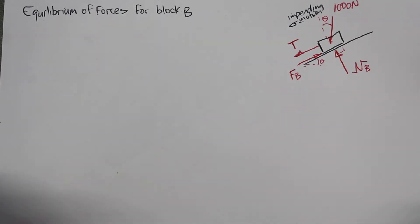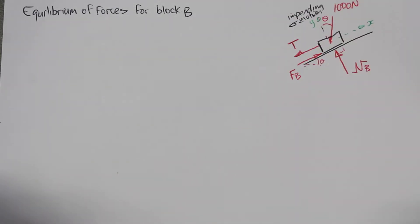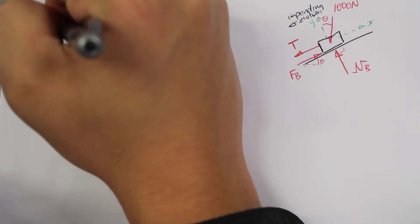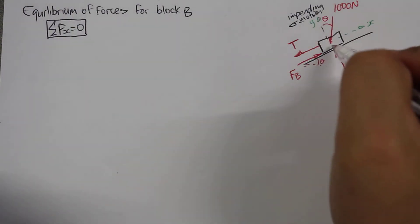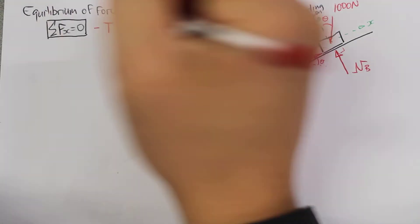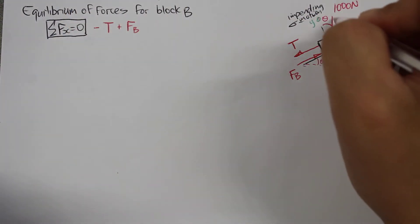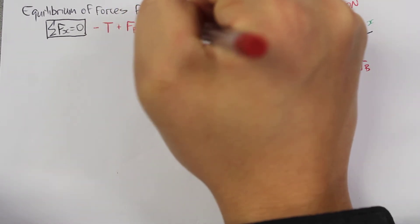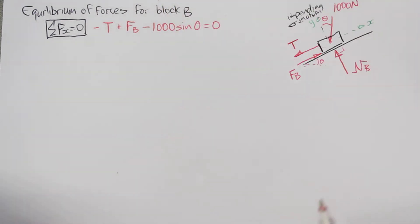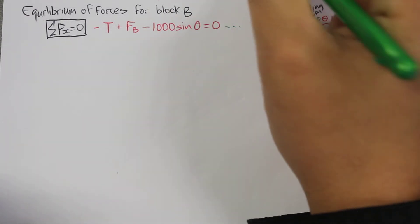From this free body diagram we'll look at the forces in the x-direction and the forces in the y-direction, and also the maximum friction force within that system. Summation of forces in the x-direction is equal to zero. In the x-direction we have the tension force going downhill, so minus T, plus the friction force going up the incline, minus the component of the 1000 Newton force going down the hill, so minus 1000 times sine theta, equal to zero. We'll call this equation number six.